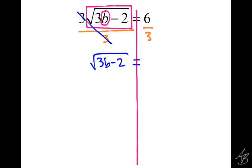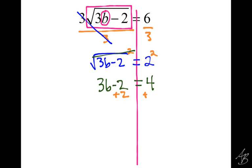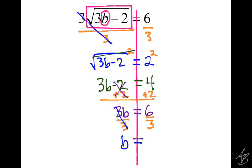The 3's cancel each other out, leaving the square root of 3B minus 2 on the left. On the other side, 6 divided by 3 is 2. Now we get rid of the square root by squaring both sides. The square and square root cancel, leaving everything that was on the inside. On the right side, 2 squared is 4. Now get rid of the minus 2 by adding 2 — those cancel, leaving 3B equals 6. Then divide by 3, and we get B equals 2.